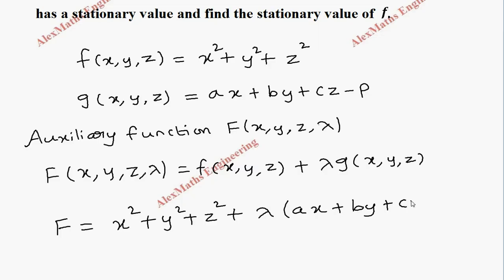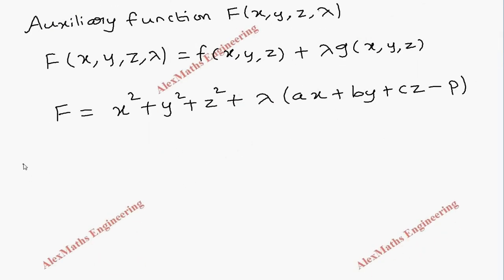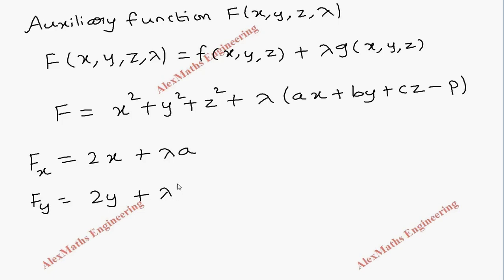We have to find the partial differentiation with respect to x: the first term is 2x, other things are constant, plus lambda into a, and the rest of the terms are constant. Partial differentiation with respect to y will be 2y plus lambda into b, and partial differentiation with respect to z is 2z plus lambda into c.